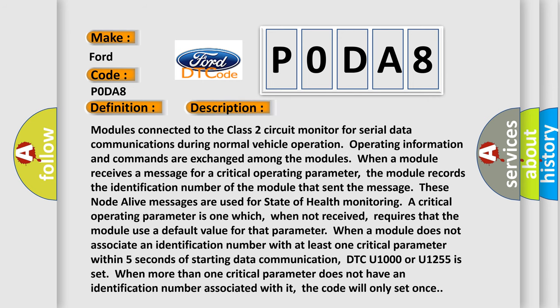Modules connected to the Class 2 circuit monitor for serial data communications during normal vehicle operation. Operating information and commands are exchanged among the modules. When a module receives a message for a critical operating parameter, it records the identification number of the module that sent the message. These node-alive messages are used for state-of-health monitoring. A critical operating parameter, when not received, requires the module to use a default value. When a module does not associate an identification number with at least one critical parameter within five seconds of starting data communication, DTC U1000 or U1255 is set. When more than one critical parameter does not have an identification number associated with it, the code will only set once.